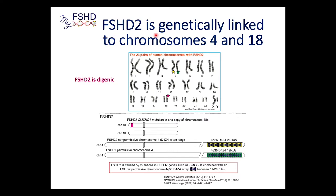What about FSHD2? FSHD2 is also genetically linked to chromosome 4 — because that's where the DUX4 gene is located — but it's also linked to chromosome 18. FSHD2 is digenic. You still need the chromosome 4 D4Z4 array with a 4A subtelomere, but you also need a second mutation in another gene, most commonly on chromosome 18. The gene product of that chromosome 18 gene — the SMCHD1 gene — functions to regulate expression of DUX4 on chromosome 4, so they are functionally linked.